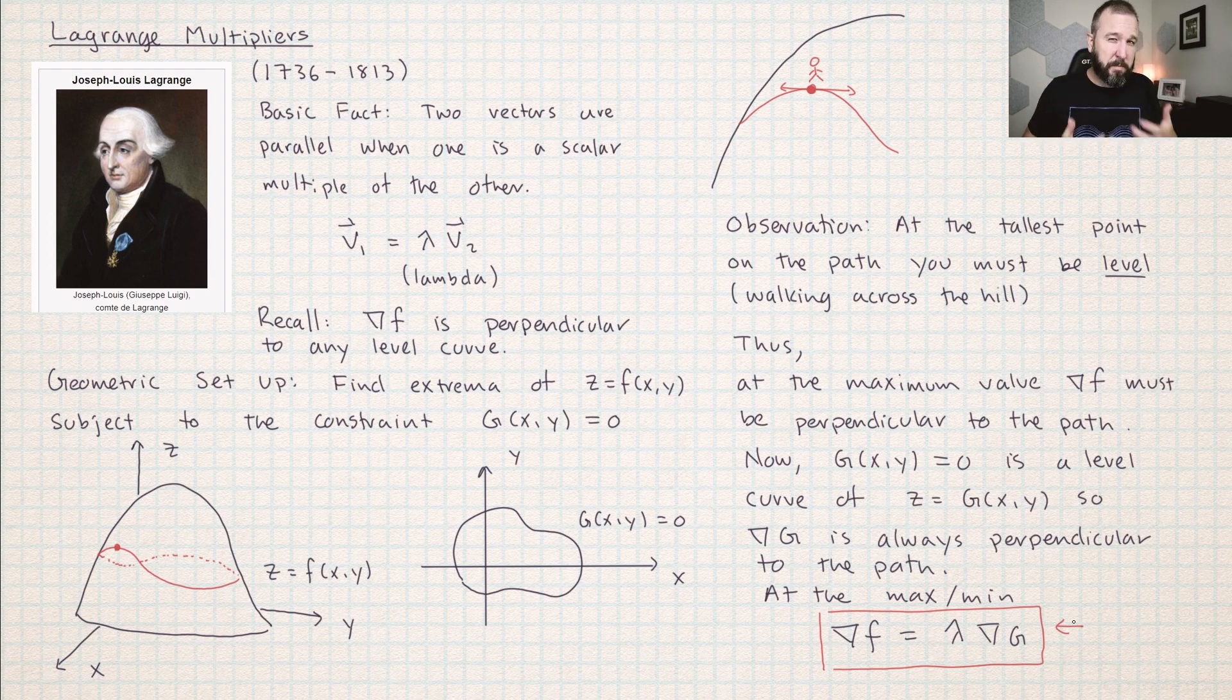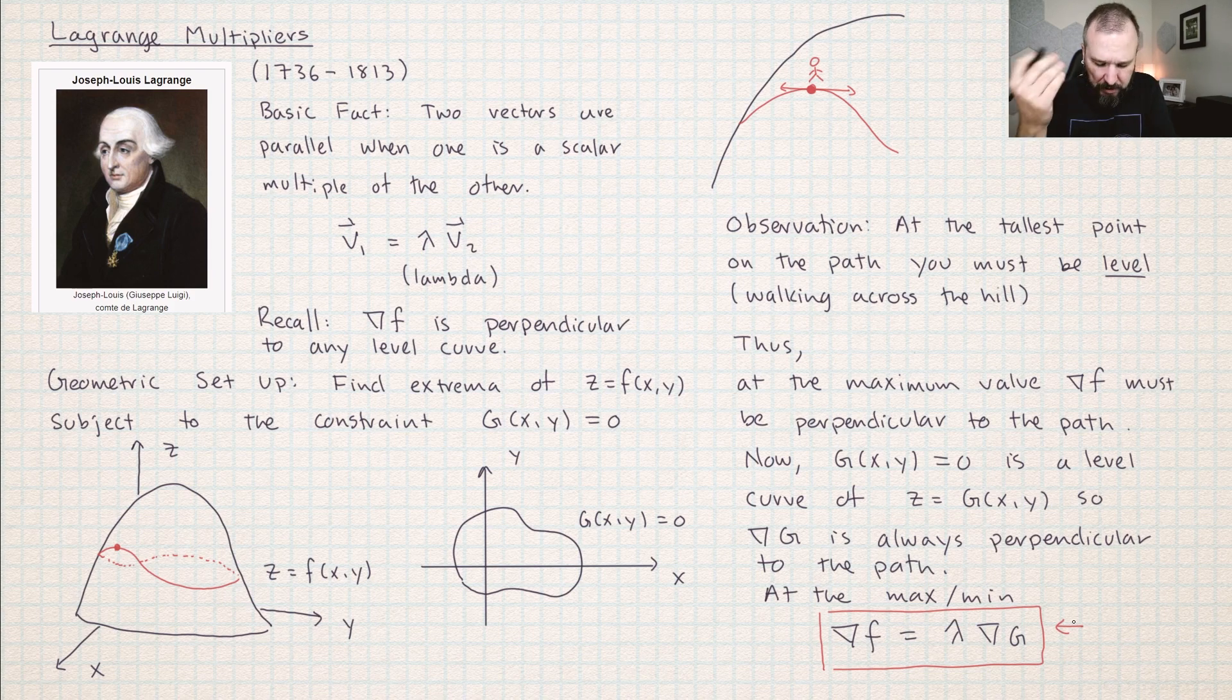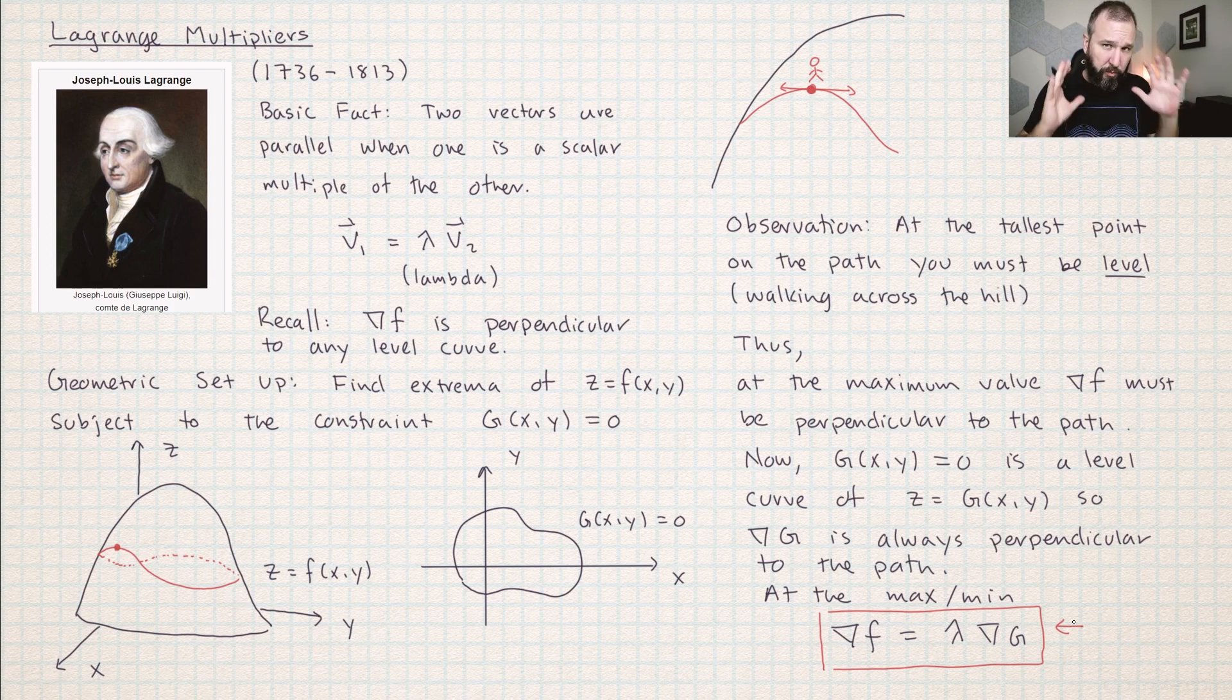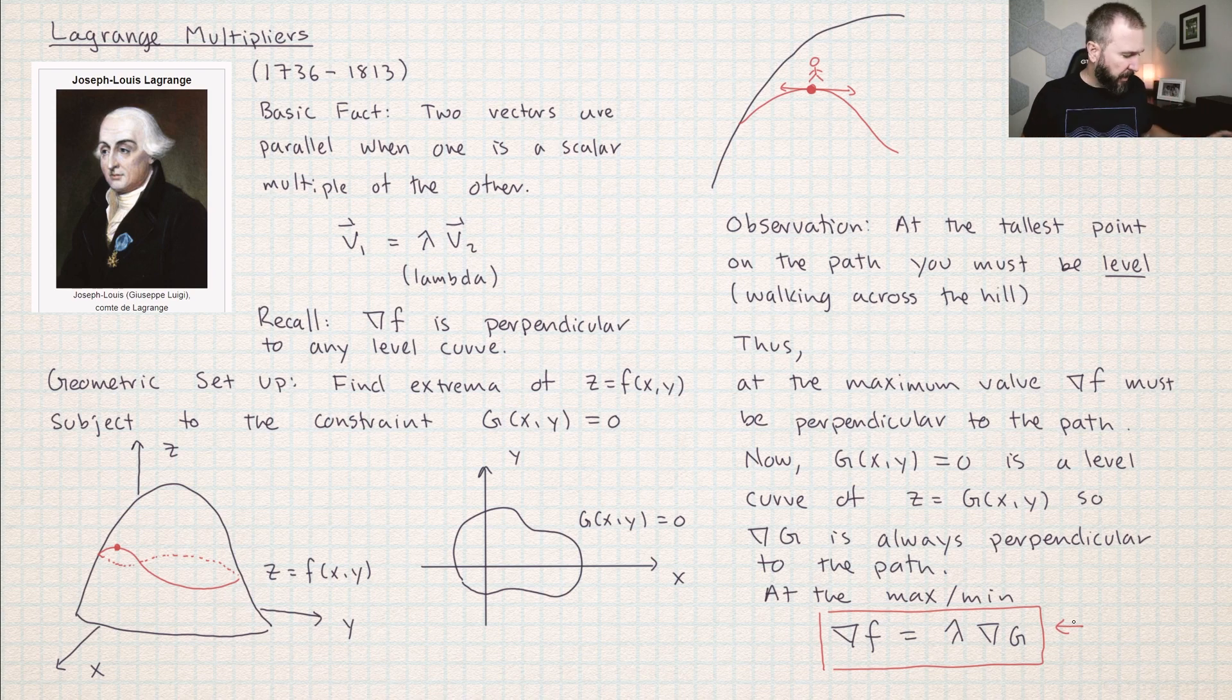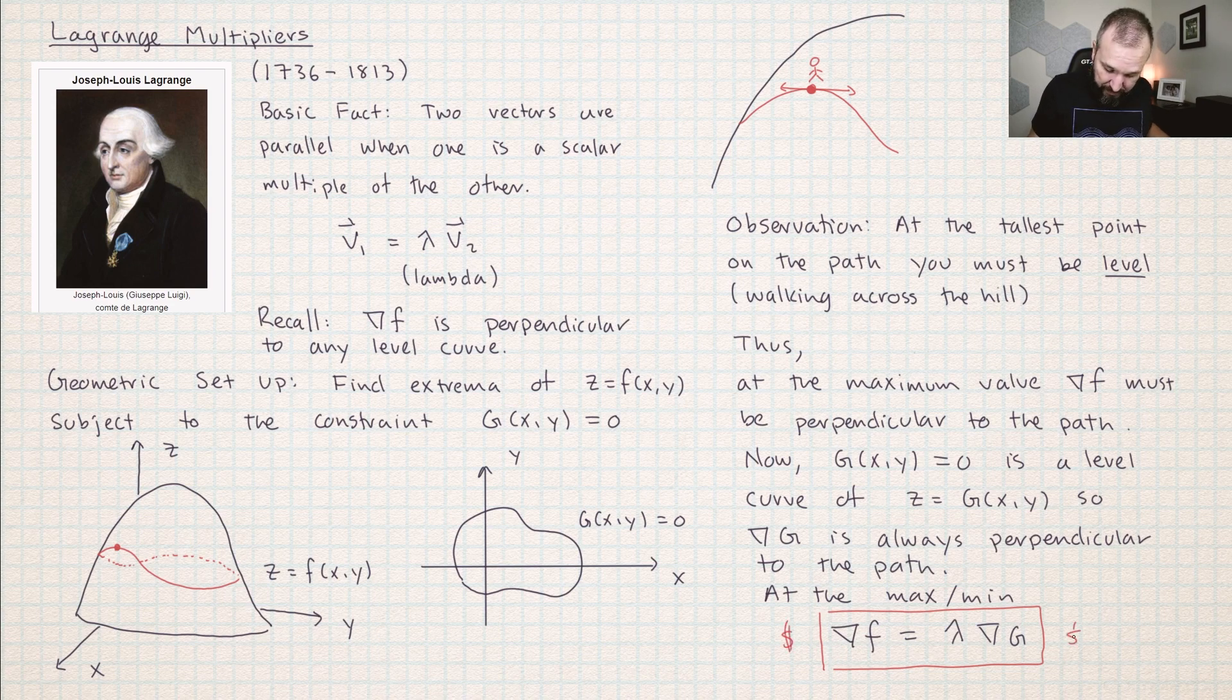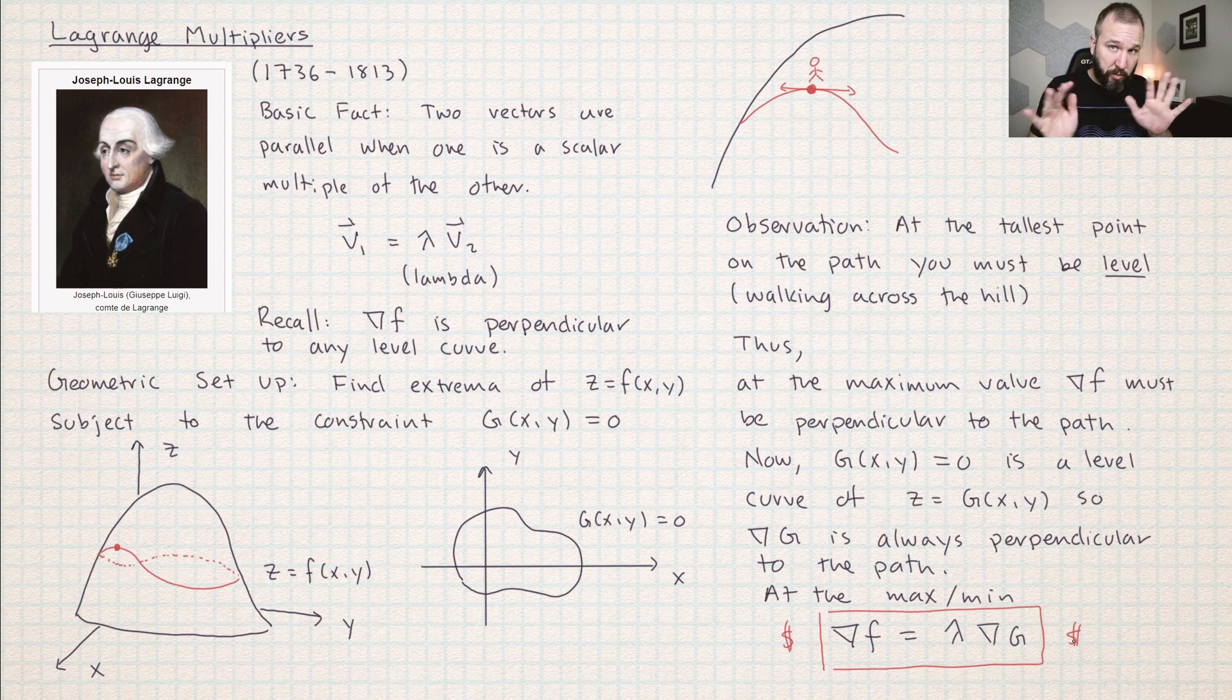There's a lot of different mechanics about how these problems play out. Usually the difficulty for students is dealing with the algebra involved in this. But I just want to first do a really basic one so that we can get something under our fingers and feel like we have a grasp on the general idea. Because this is really the magic statement right here: at the maximum value, these two gradients must be parallel to each other.